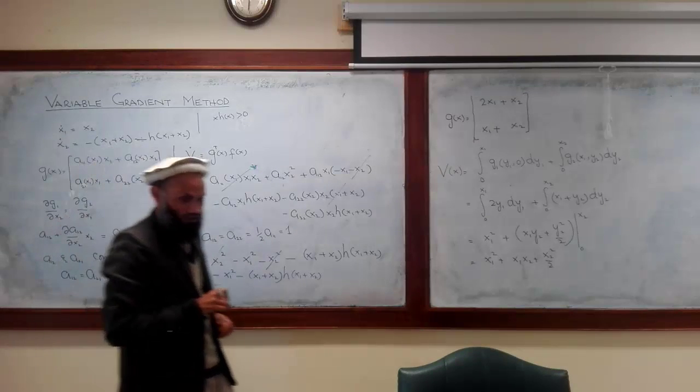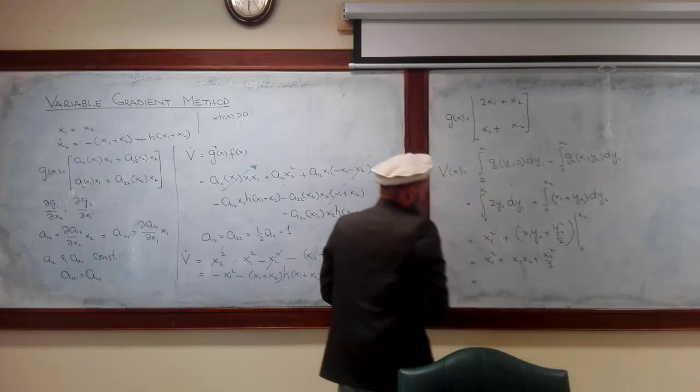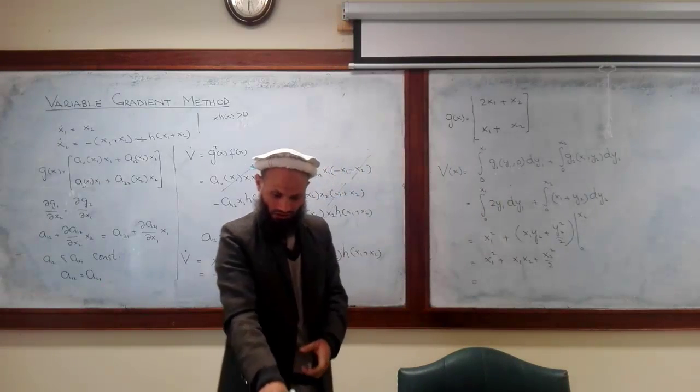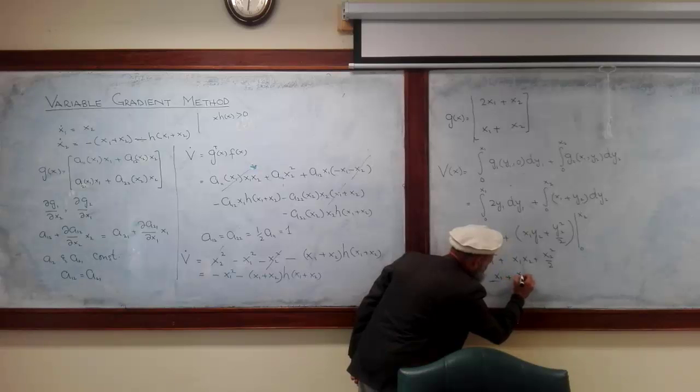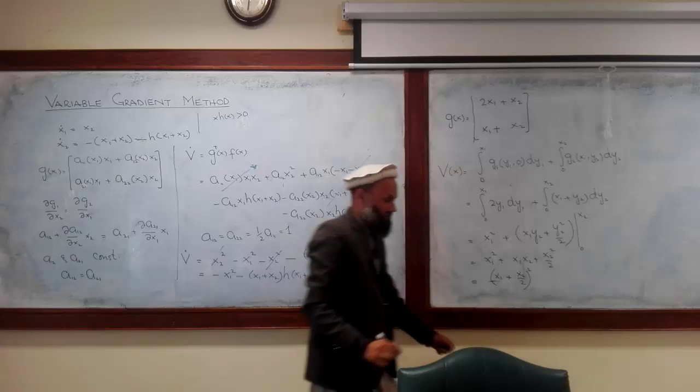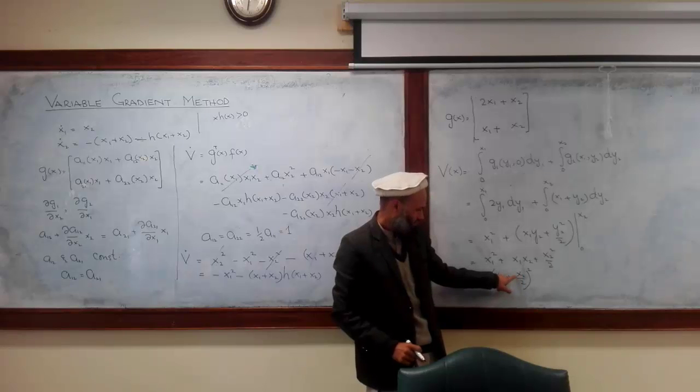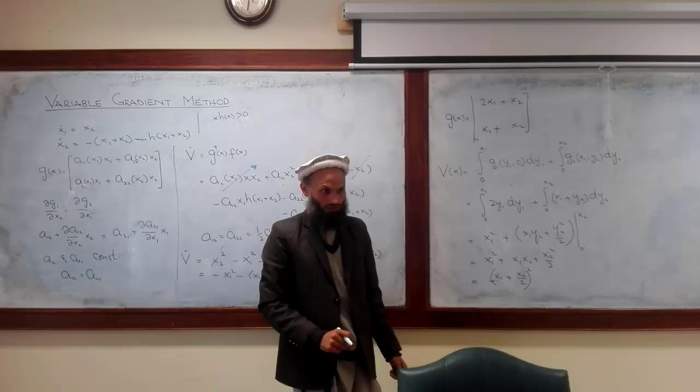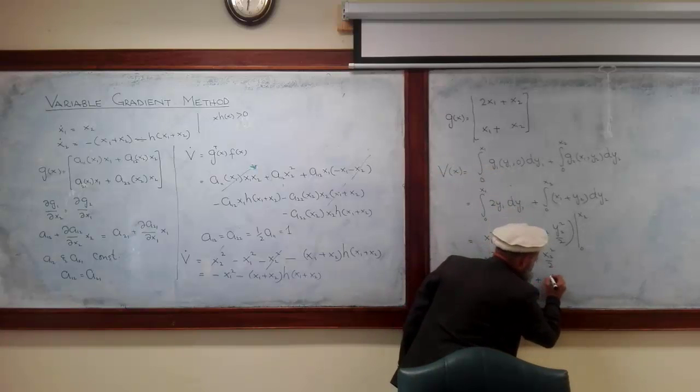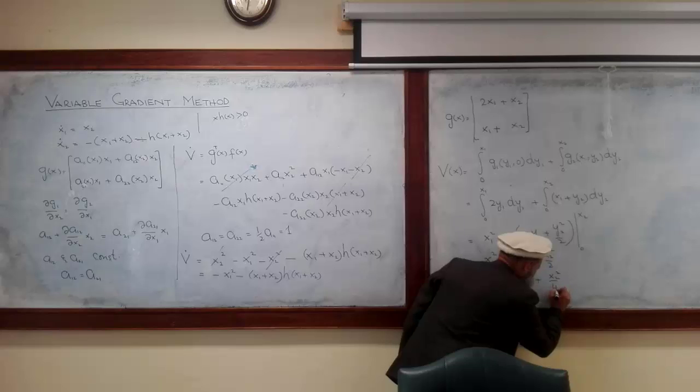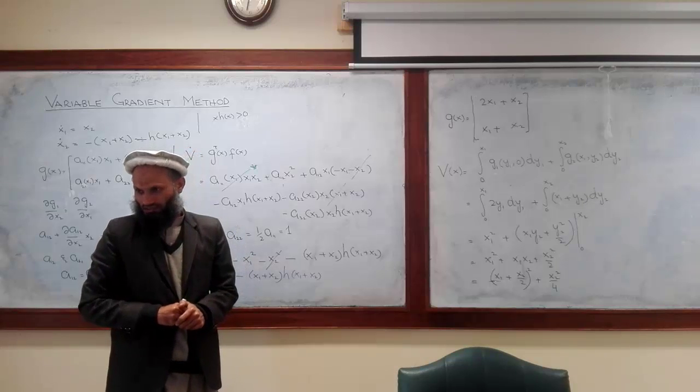What about definiteness of this function? We rearrange it to see the definiteness. We can rearrange to write it in this way: x1 plus x2 by 2 whole square. If we expand it we get x1 square, x1 x2 plus x2 square by 4. Here we have x2 square by 2, so plus x2 square by 4. Why we rearrange to write it in this way? So that we can see the definiteness of this function.